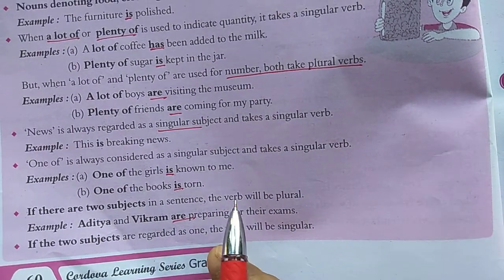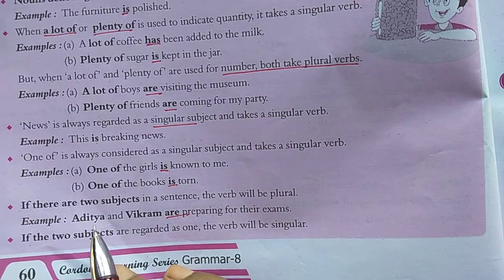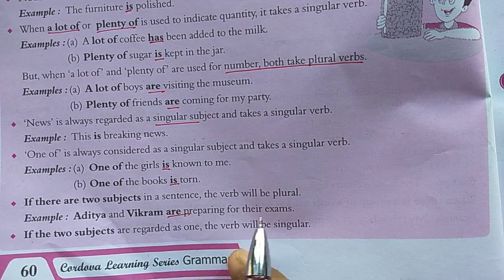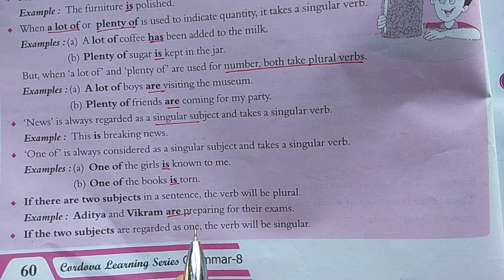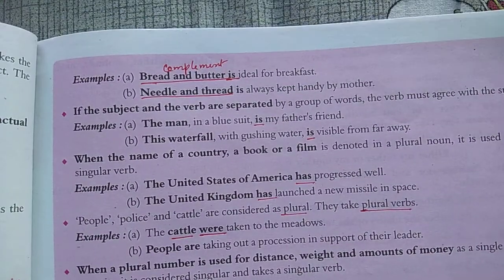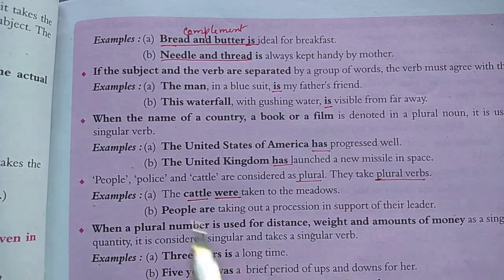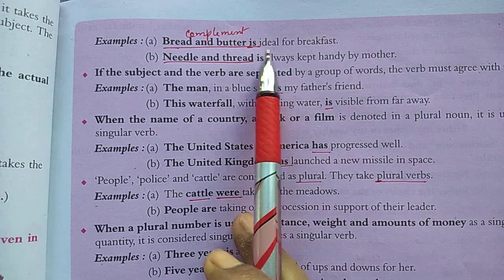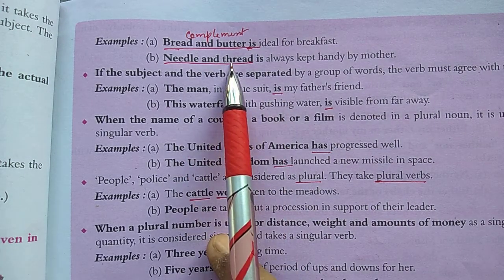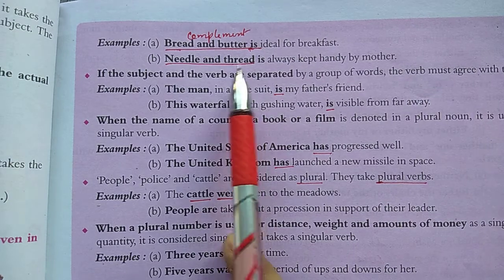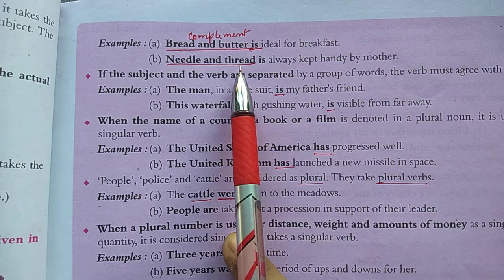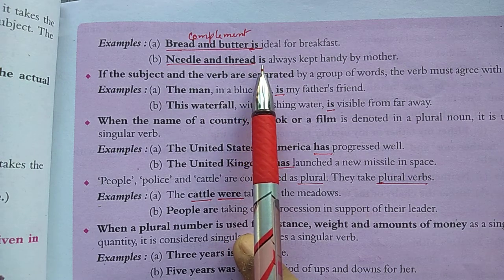If there are two subjects in a sentence, the verb will be plural. For example, 'Aditya and Vikram are preparing for their exam' — two different people, so plural verb. However, if two subjects are regarded as one — that is, they complement each other — the verb will be singular. For example, 'Bread and butter is...' — they complement each other, so singular. 'Needle and thread is...' — you cannot work with only one without the other, so they are treated as one.